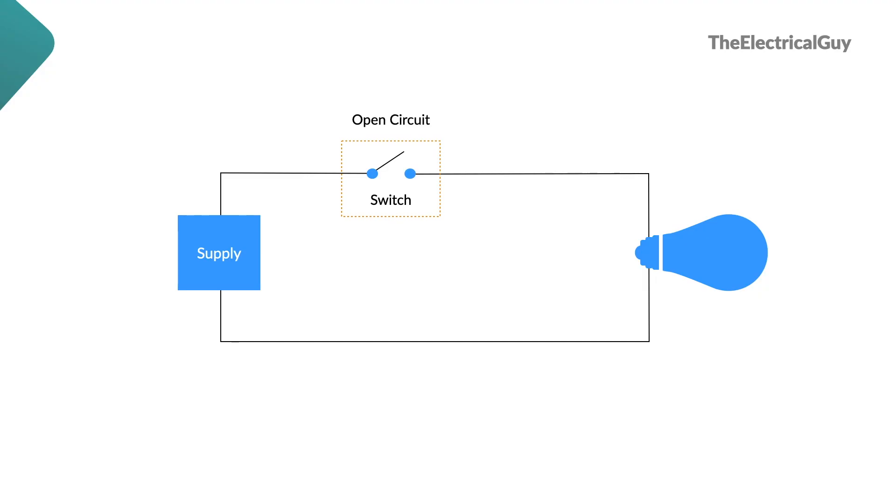So this is the open circuit. And if you close this open part, electrons will start flowing again. And now we can call this as a closed circuit.